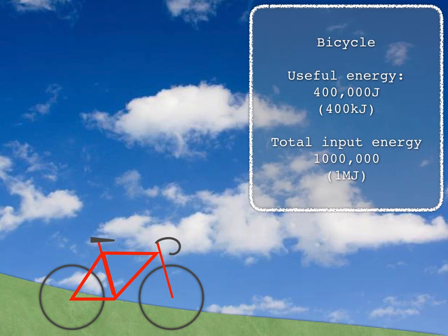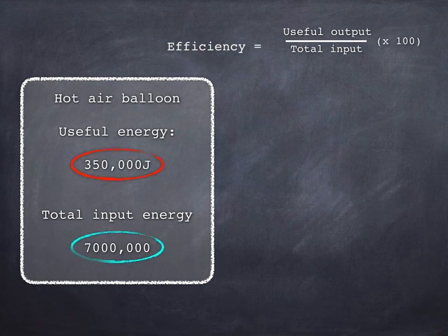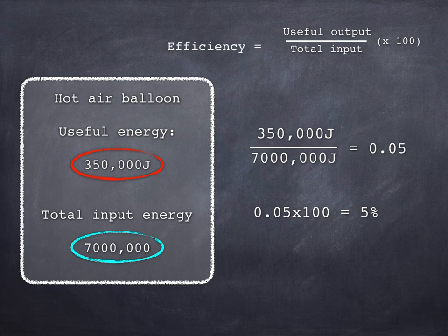Using those numbers, the reality becomes pretty clear. Glamorous the balloon might be. If we divide the useful output by the total input, we get an efficiency of just 0.05 or multiplying by 100, 5%. Either way, not too clever really. We'd be wasting 95% of the energy we put in.